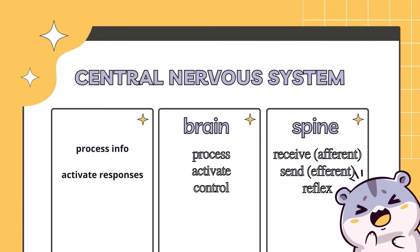The central nervous system is made out of the brain and spinal cord. The brain is a network of cells in your skull that processes information, directs actions and controls all functioning. The spinal cord has two major functions via the peripheral nervous system: to receive sensory information from the body via afferent ascending tracts and send it to the brain for processing, and to receive motor information from the brain via efferent descending tracts and send it to muscles, organs and glands. Tracts are just bundles of nerve fibres in the spine.